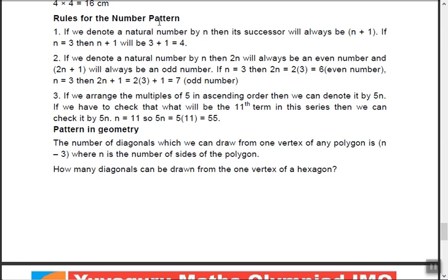Rules for number patterns: if we denote a natural number by n, then its successor is n plus 1. For example, if n equals 3, the successor is 4. This is true for whole numbers — putting 0 gives successor 1 — and for integers as well. For example, the successor of minus 7 is minus 7 plus 1, which is minus 6.